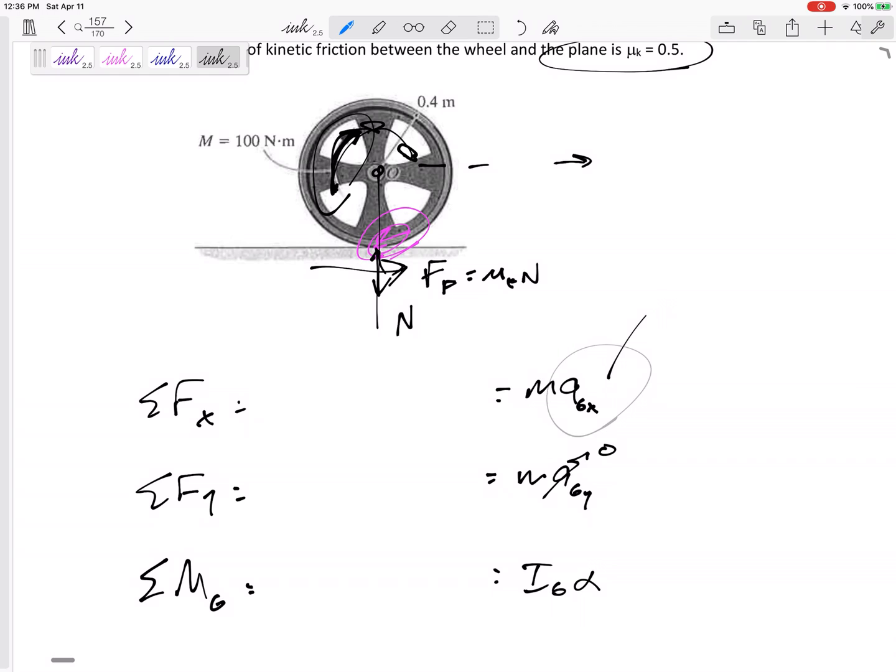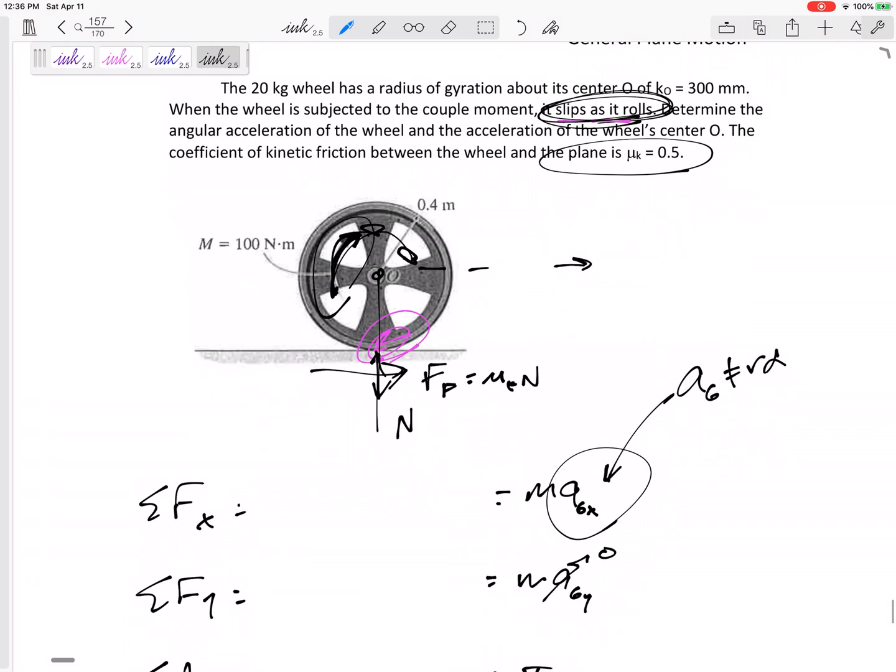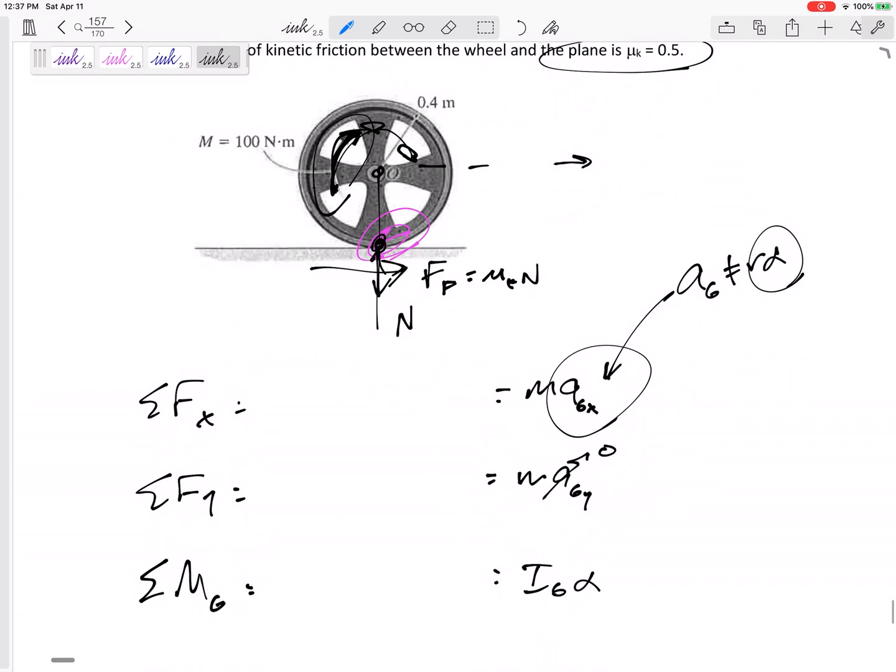Now in this case, this acceleration of G is not R alpha because it is slipping as it's rolling. This is only true for wheels that are rolling without slipping. Wheels that have good contact with the ground. Wheels that have a velocity of zero down here. But I would have enough information now that I know force of friction. I would have three equations with three unknowns. My unknowns probably N, acceleration in the X, and alpha. And these two are not related because it is slipping as it's rolling.